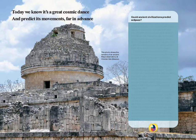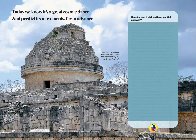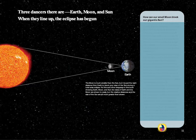Today we know it's a great cosmic dance and predict its movements far in advance. Science allows us to predict eclipses centuries in advance today, but there were a few ancient cultures, such as the Maya in Central America, that actually got pretty good at eclipse prediction. This page shows how you can get a total solar eclipse when the Moon is positioned just right to block your view of the Sun if you live in the spot where the Moon's shadow is touching Earth.